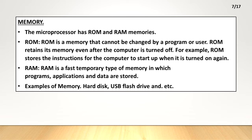RAM is a fast temporary type of memory in which programs, applications and data are stored. Examples of memory: Hard disk, USB flash drive and etc.